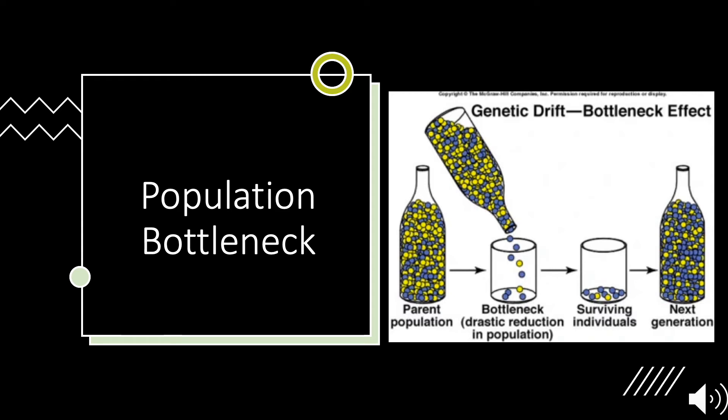So how does that happen? It's because when you only have a certain amount of individuals left over in your population, they are only left to breed with each other in order to reboot this population. If they are mating with one another, there is the possibility of inbreeding.